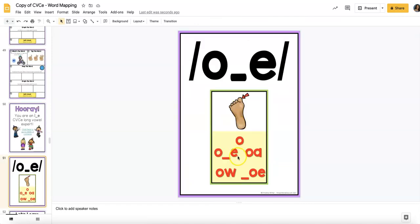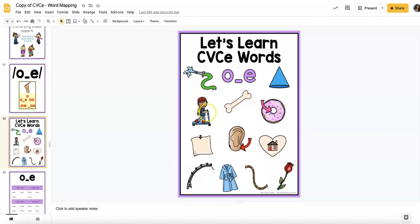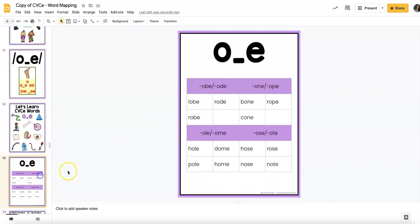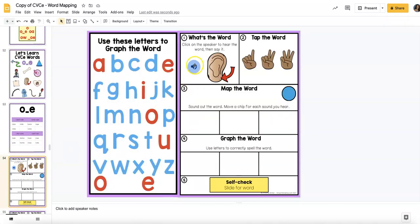Your students can look at the sound card to practice all the spelling patterns with long O. You can see some long O picture and word cards. These will be the words that are ready to be mapped. And so here would be the first digital slide.